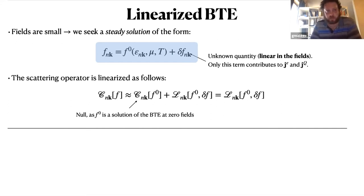Obviously the previous equation is difficult to solve, so we start to introduce some approximation. The first one is related to the fact that we are studying everything in the linear regime, so fields are small, and we can seek a solution in the form of a correction to the Fermi-Dirac equilibrium function. This is our unknown quantity that is linear in the field, and only this term contributes to the current densities. By the same token, we have to linearize also the scattering integral. This is just a Taylor-like expansion for functionals. The constant here is zero because f0 is a solution of the Boltzmann equation at zero fields, and we are left with this operator that is essentially a linear functional of the correction delta f.